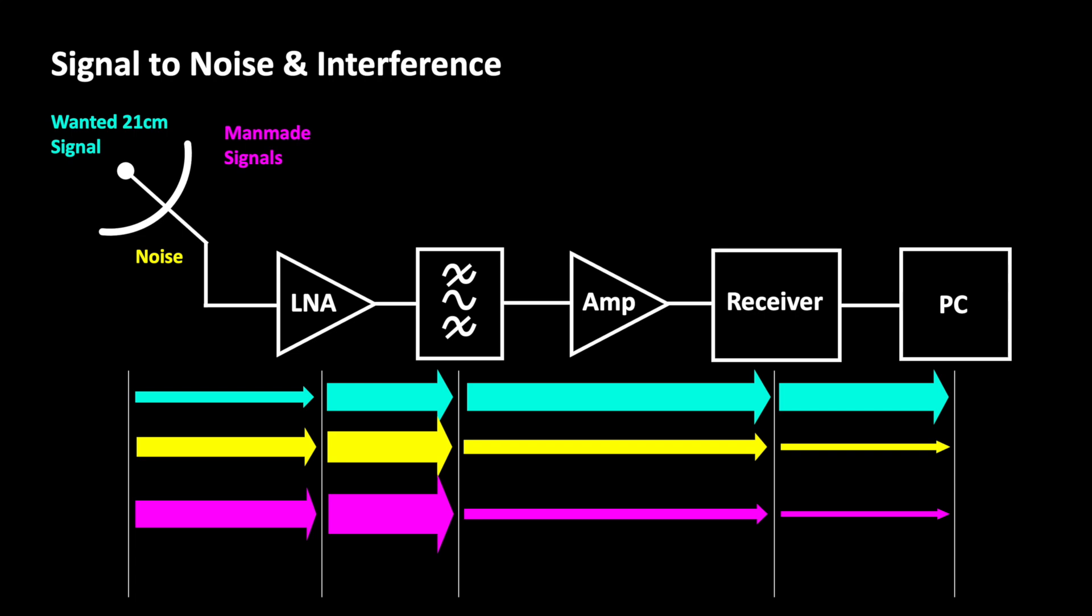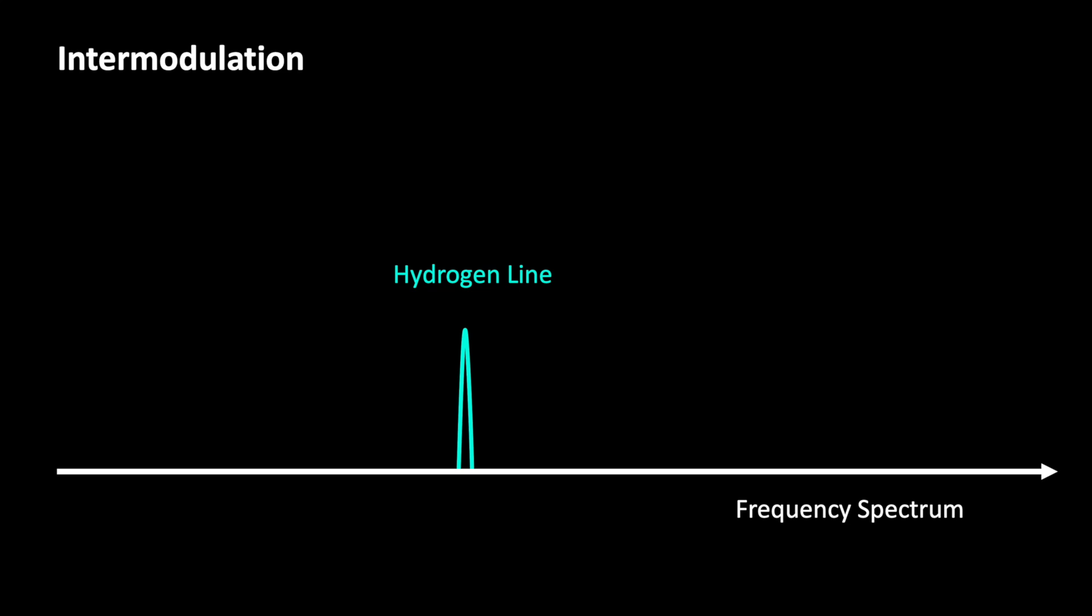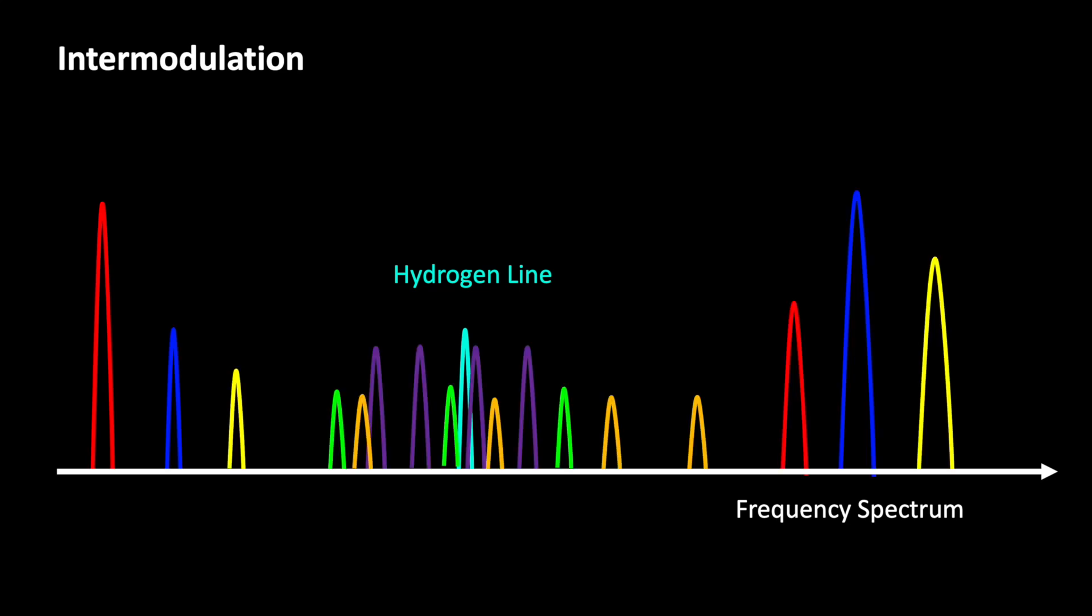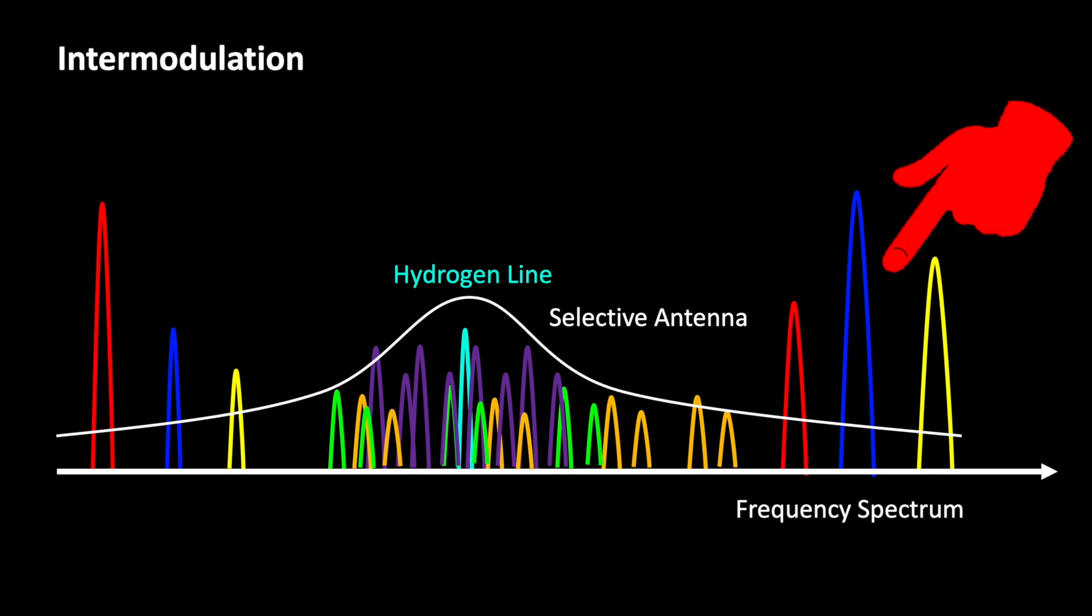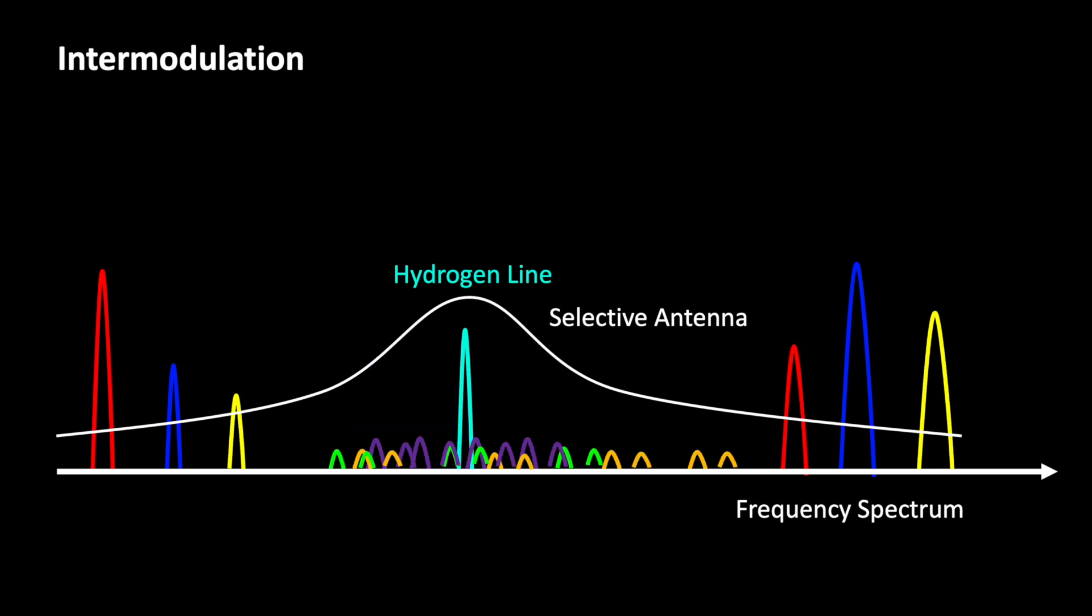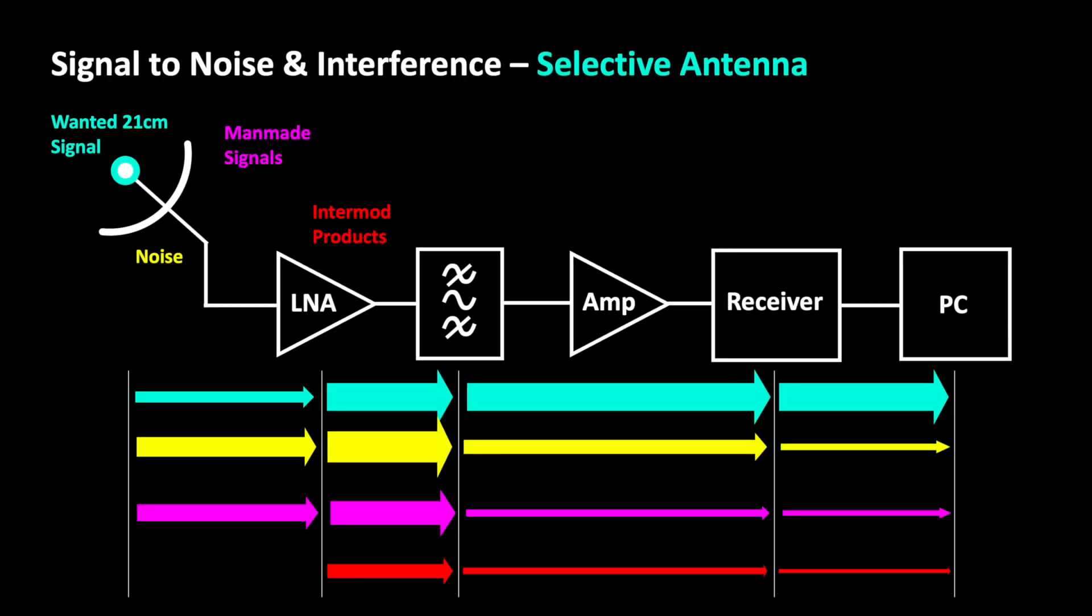strong signals are driving the LNA to its limits, causing intermodulation products. All of a sudden, noise and hundreds of signals can superimpose our wanted signal, even though they are not actually present in the air. What can we do about it? A frequency selective antenna avoids the LNA being modulated by strong signals in the neighboring frequency bands. You are even achieving a disproportionate improvement, because the amplitude of the intermodulation products is increasing and decreasing with the third power in relation. In other words, our loop antenna is reducing the signal amplitudes on the neighboring bands, and thus intermodulation products are dropping rapidly.